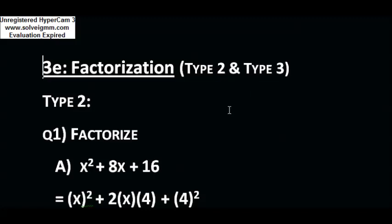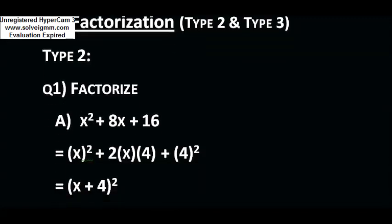Using the first two identities, here is question number 1: factorize x² + 8x + 16. First, look at the first term and the last term — these are perfect squares. x² is a perfect square, and 16 is also a perfect square, which can be written as 4².